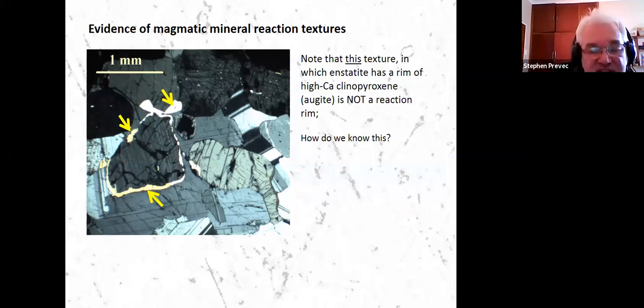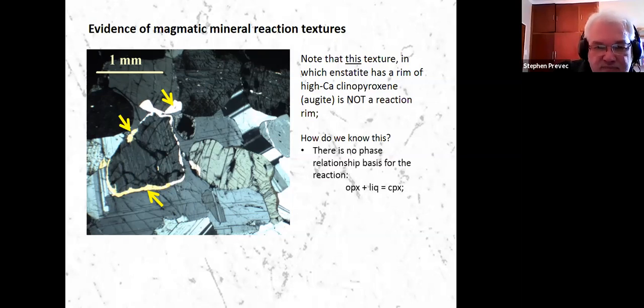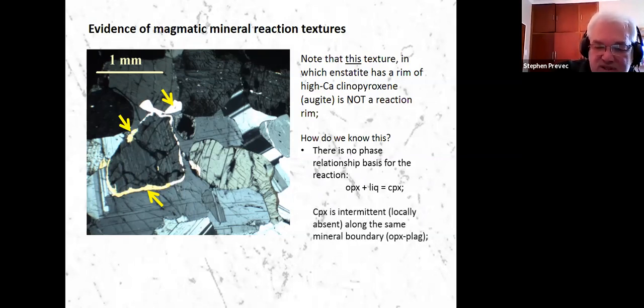However, we don't believe this is any kind of reaction rim. Partly it's discontinuous, the clinopyroxene. It seems to be at the boundary of the orthopyroxene, whether it's in contact with plagioclase or with other orthopyroxenes, which isn't really consistent with a reaction rim. There's no expected reaction between those phases, which should produce this. So we believe that what we're actually seeing here is exsolution lamellae from within the orthopyroxene, which because this grain has been suspended at high temperatures for a long time, diffusion has allowed that material to migrate to the grain boundaries and collect there.